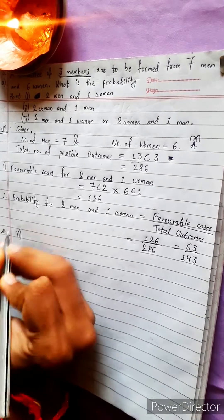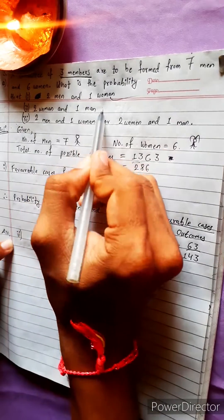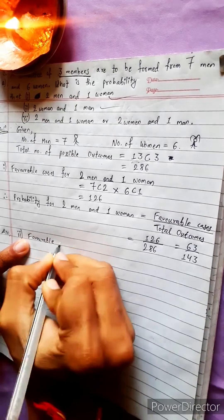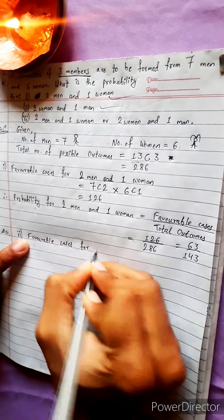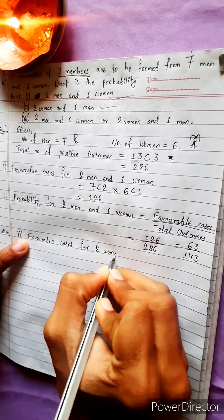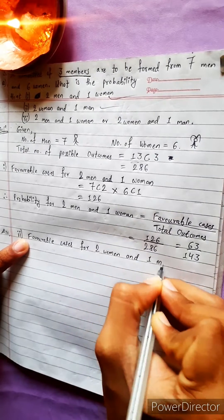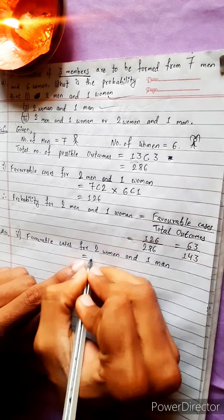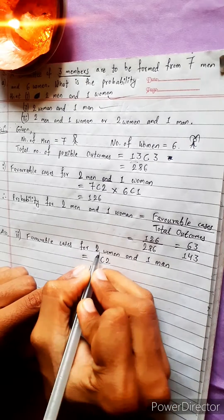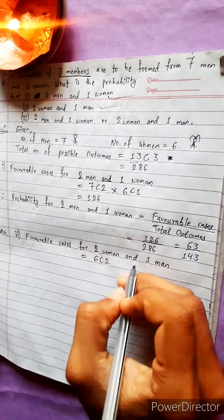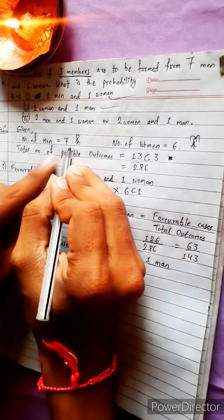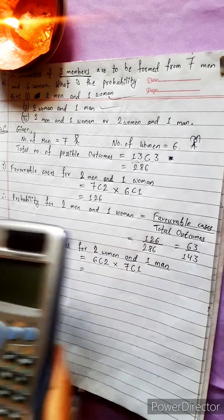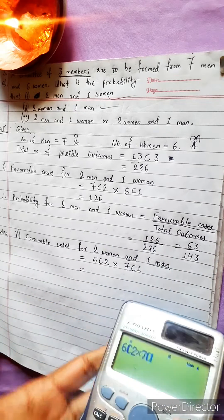Now for case two: two women and one man. The favorable cases equal 6C2 multiplied by 7C1, because we need two women from six and one man from seven. 'And' means multiply.